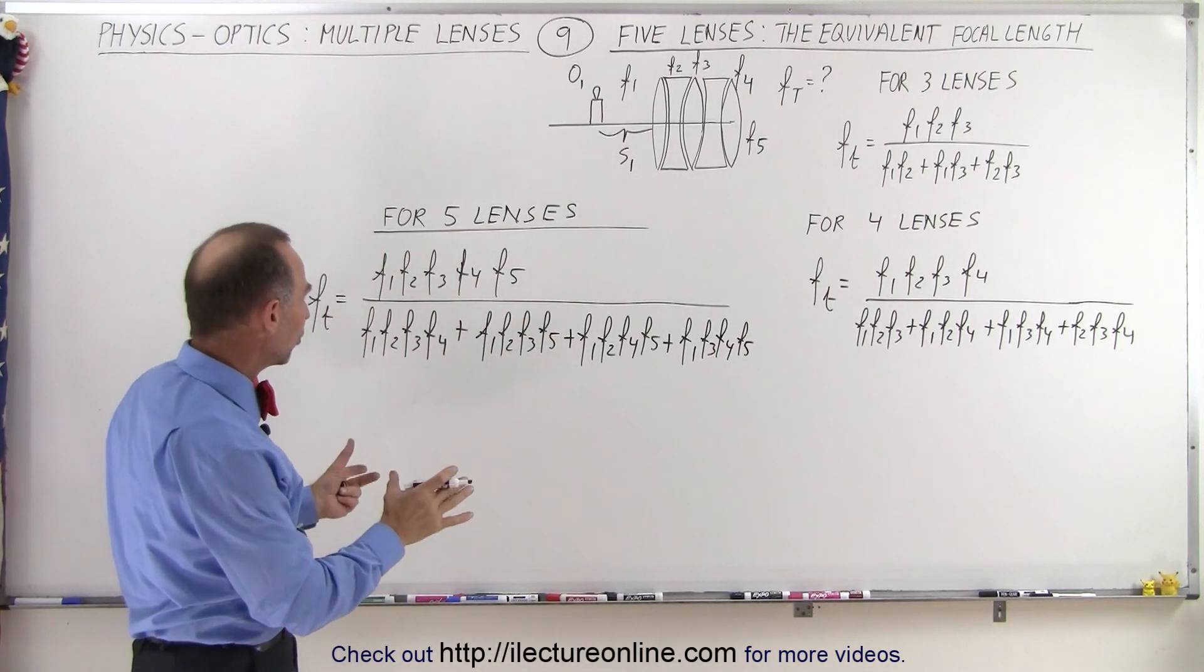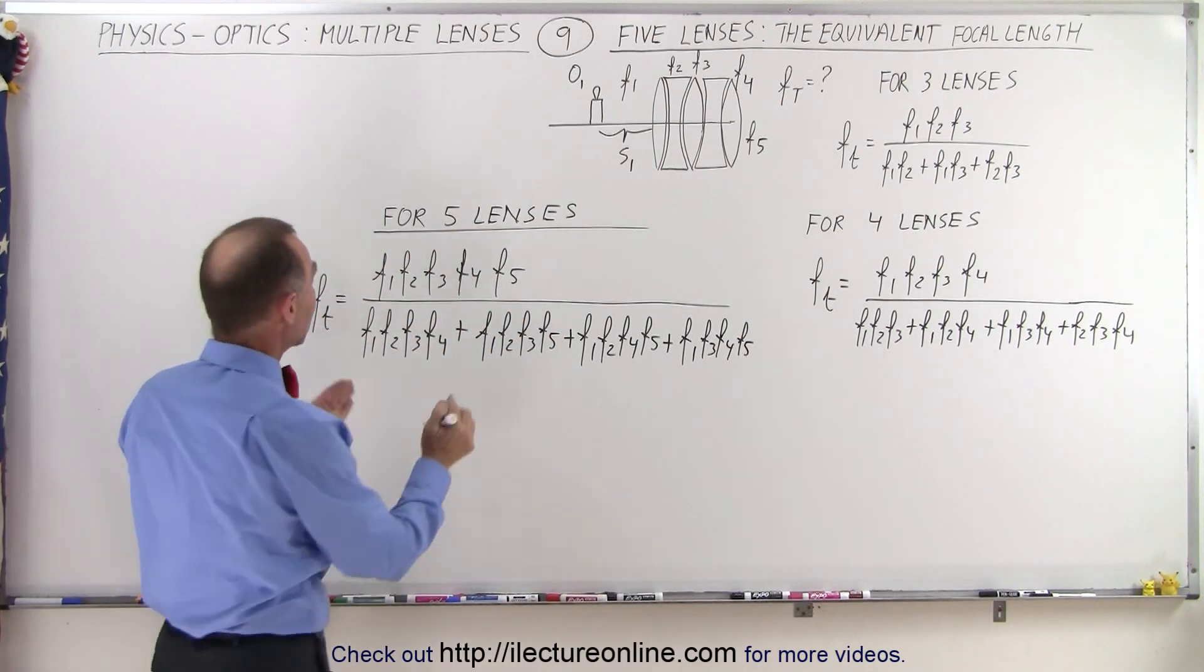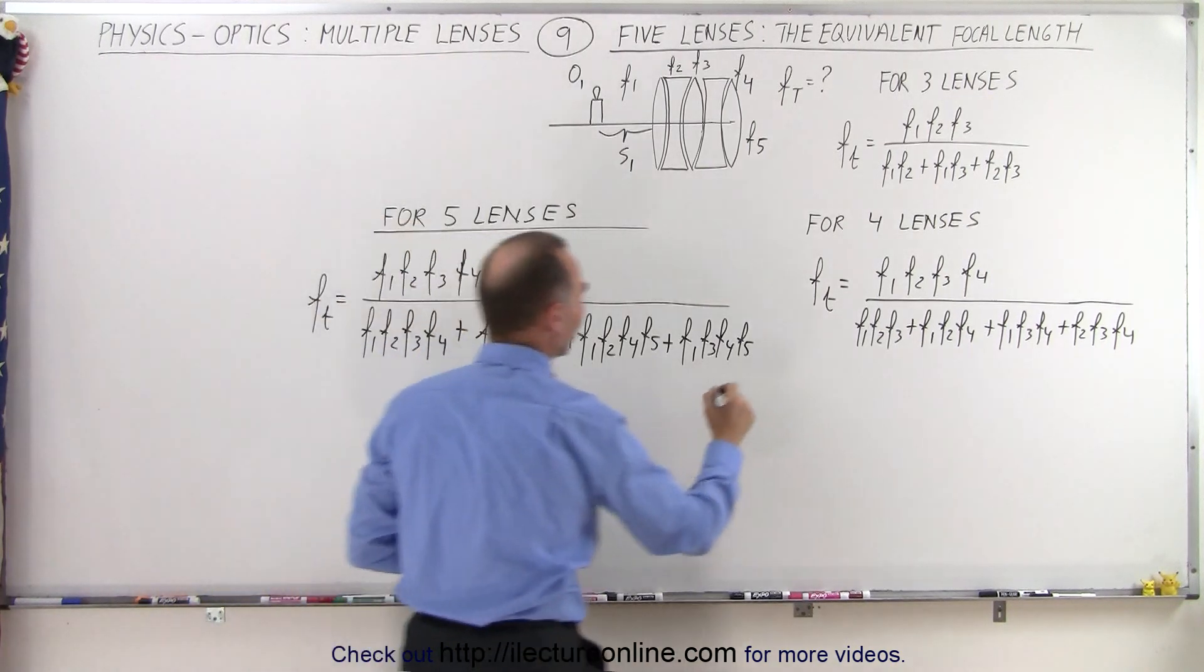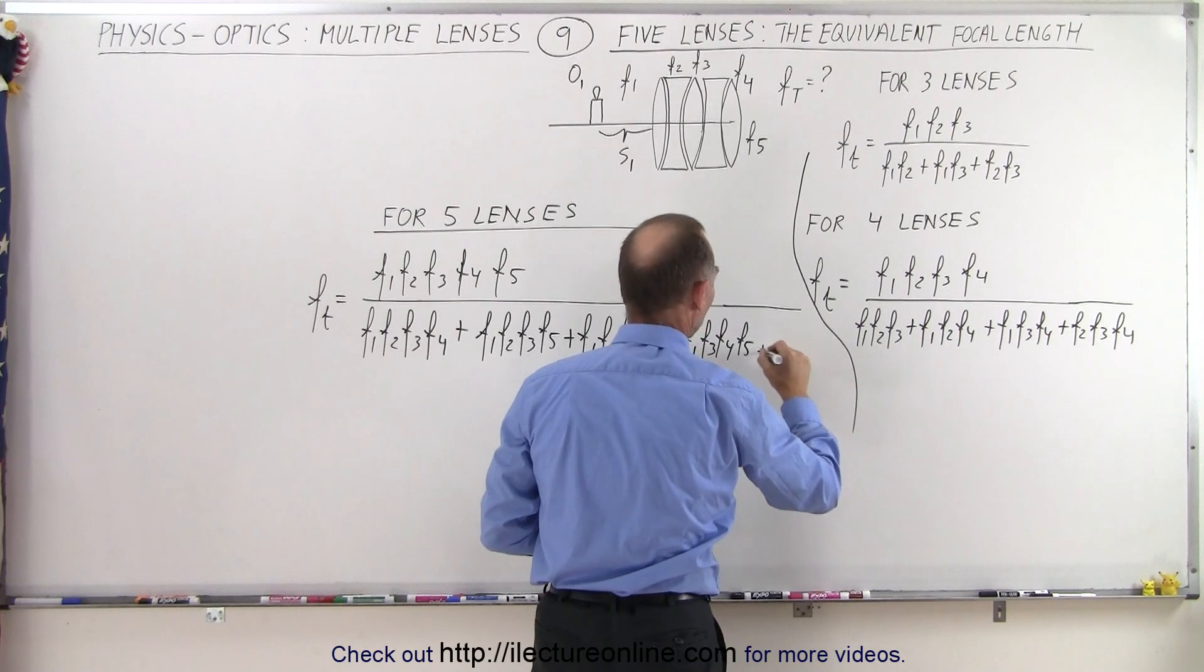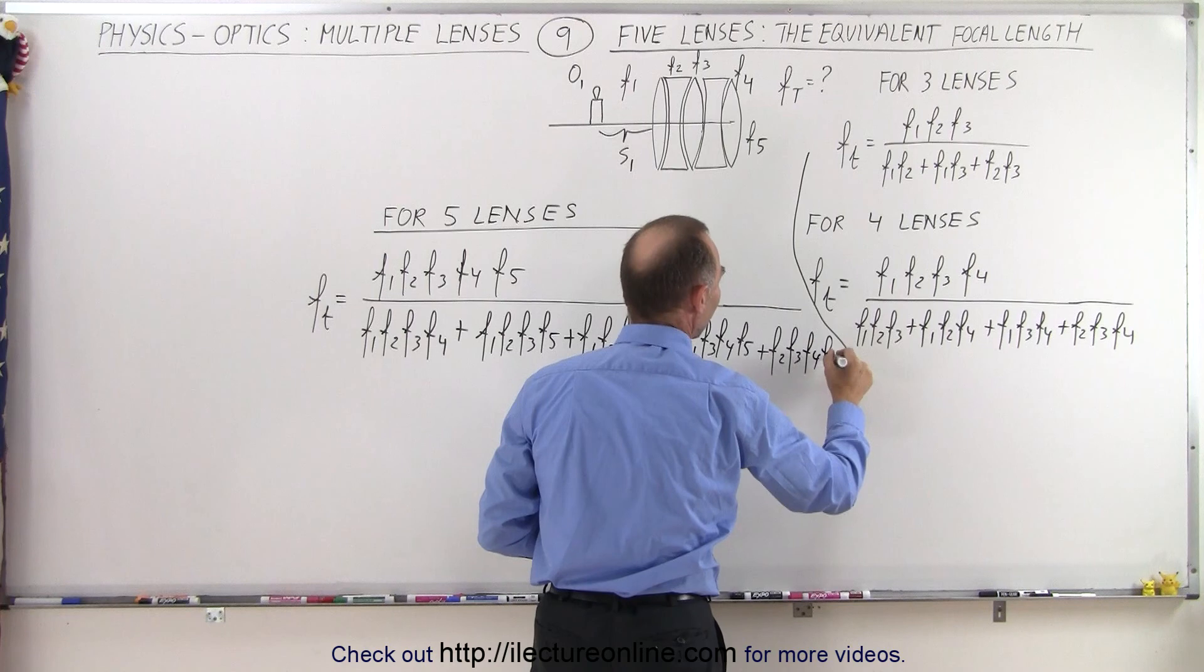And then one more term. So now we're going to repeat everything with just the last five. I'll put a big line here so we don't get confused. So plus F2, F3, F4, and F5.